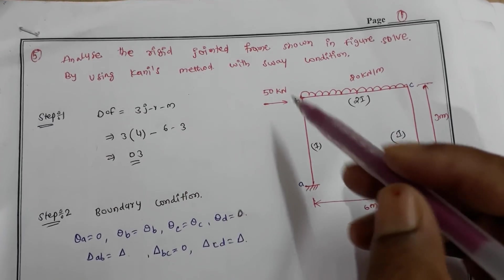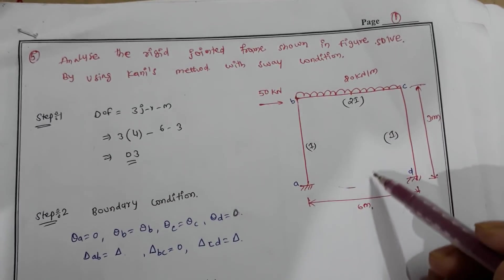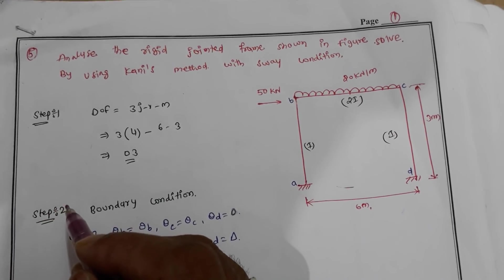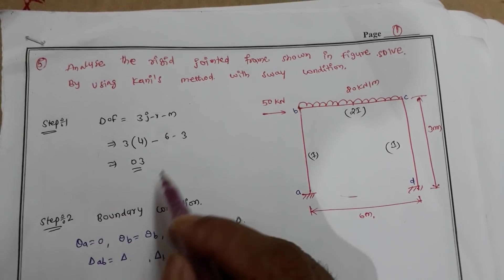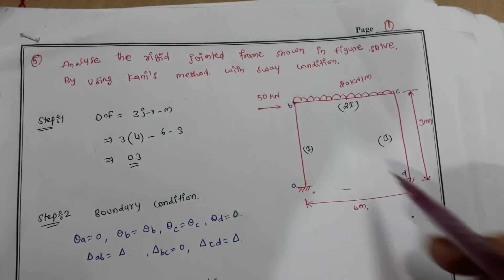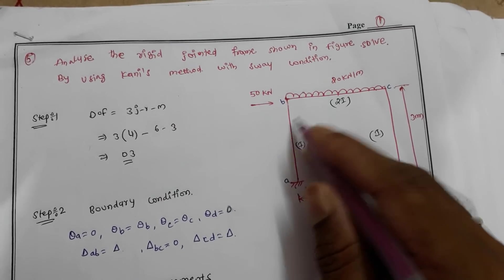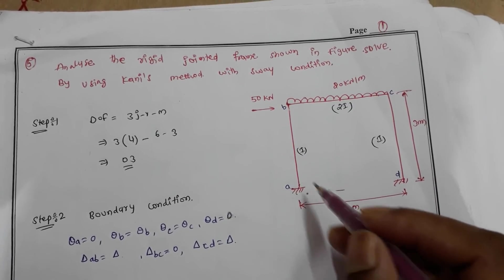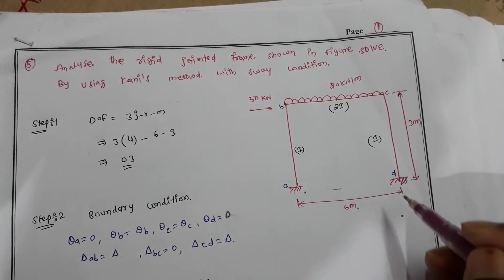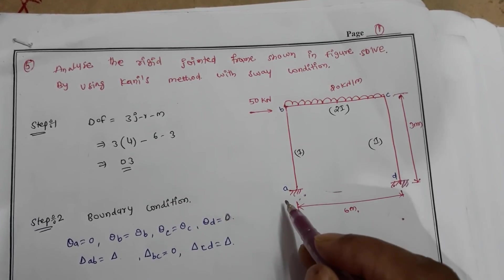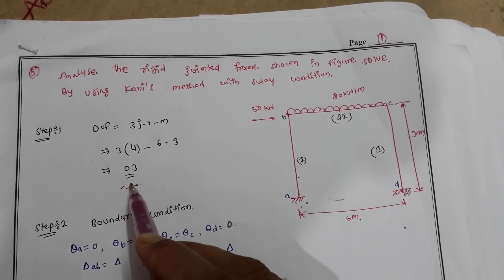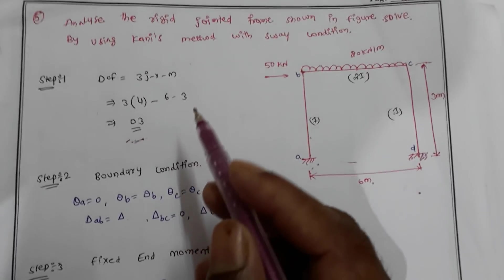Today we will discuss analysis of frames using Kani's method. The first step is to find the degree of freedom: 3j minus r minus m. Here we have 4 joints A, B, C, D; 6 reactions (two fixed supports giving 3 reactions each, total 6); and 3 members. The degree of freedom is 3, so we need to fix the boundary conditions.